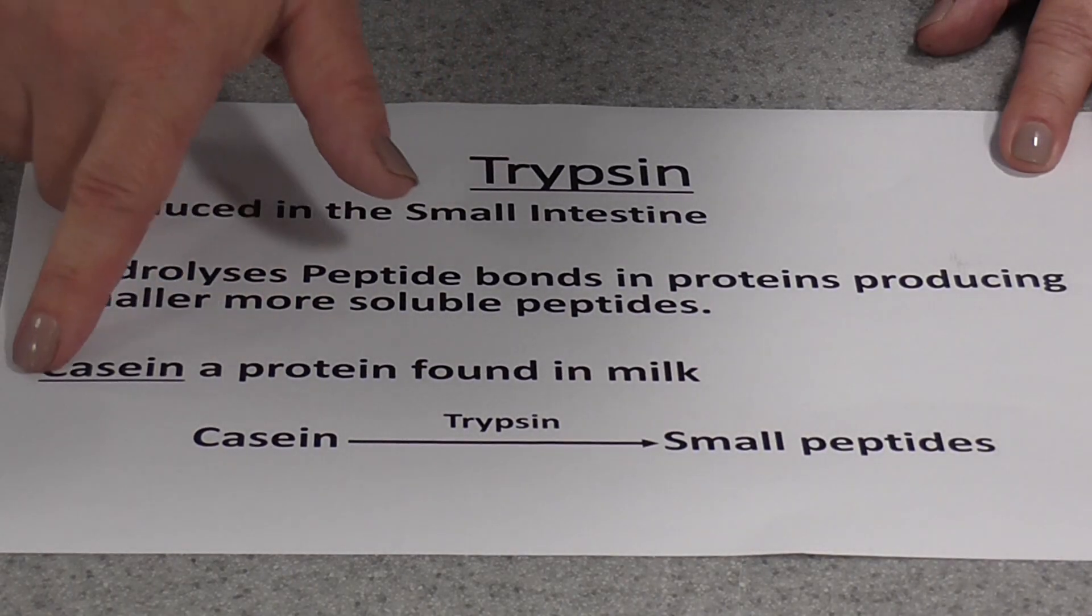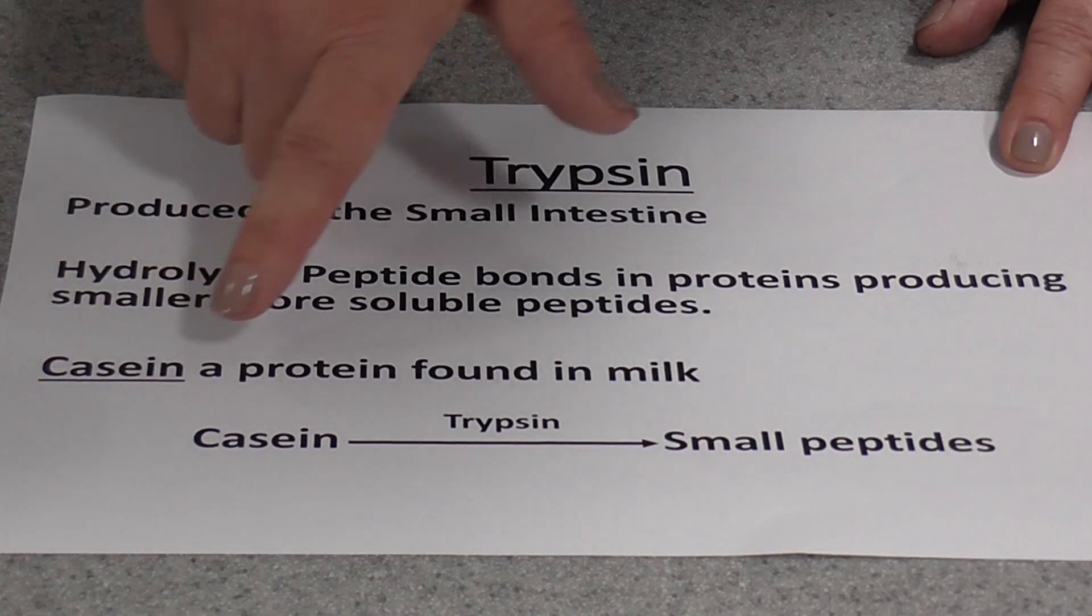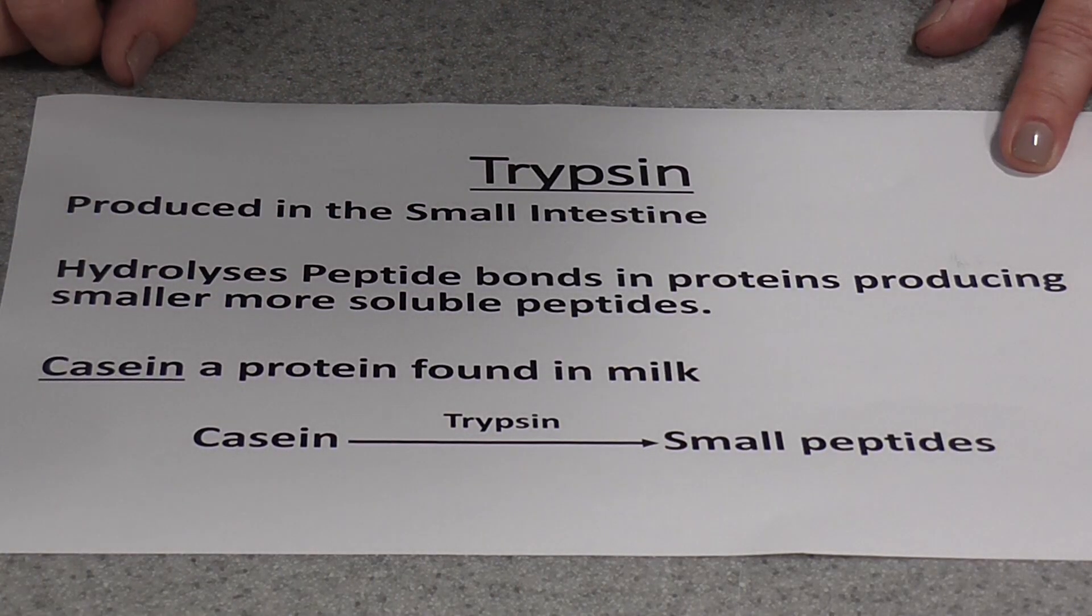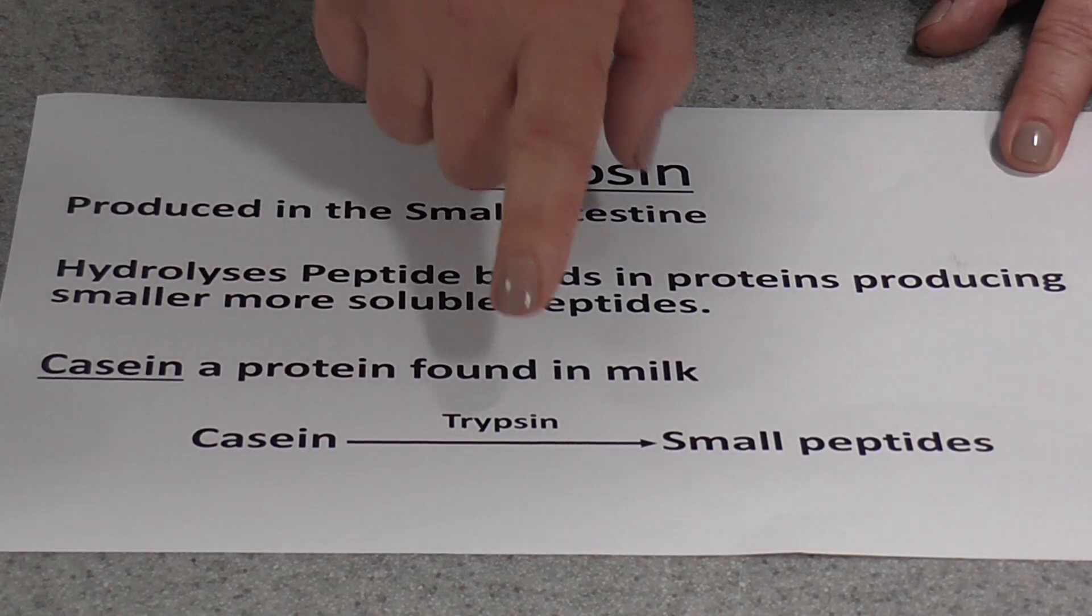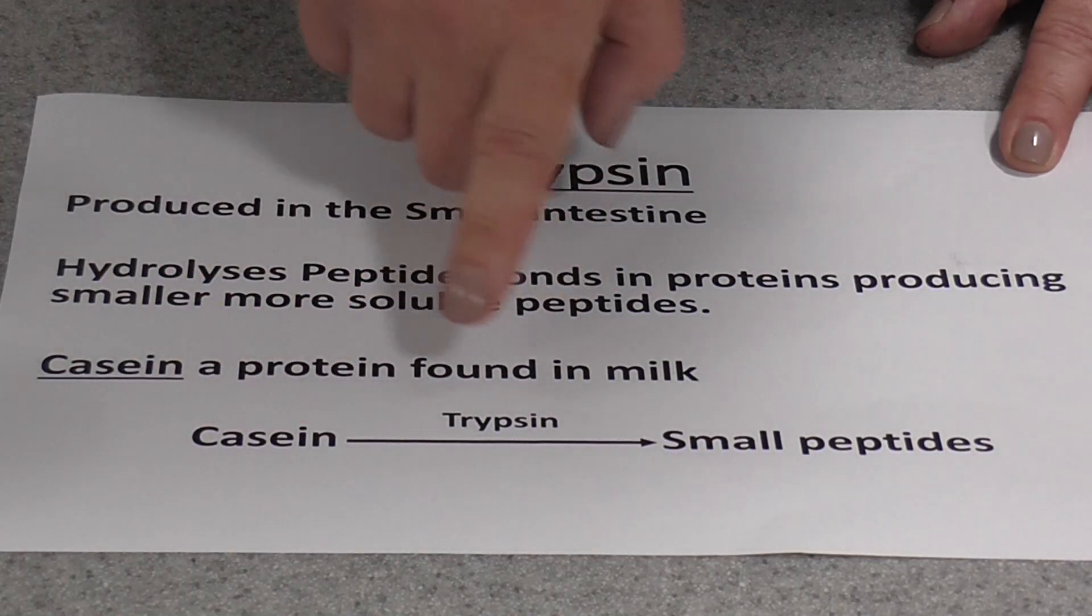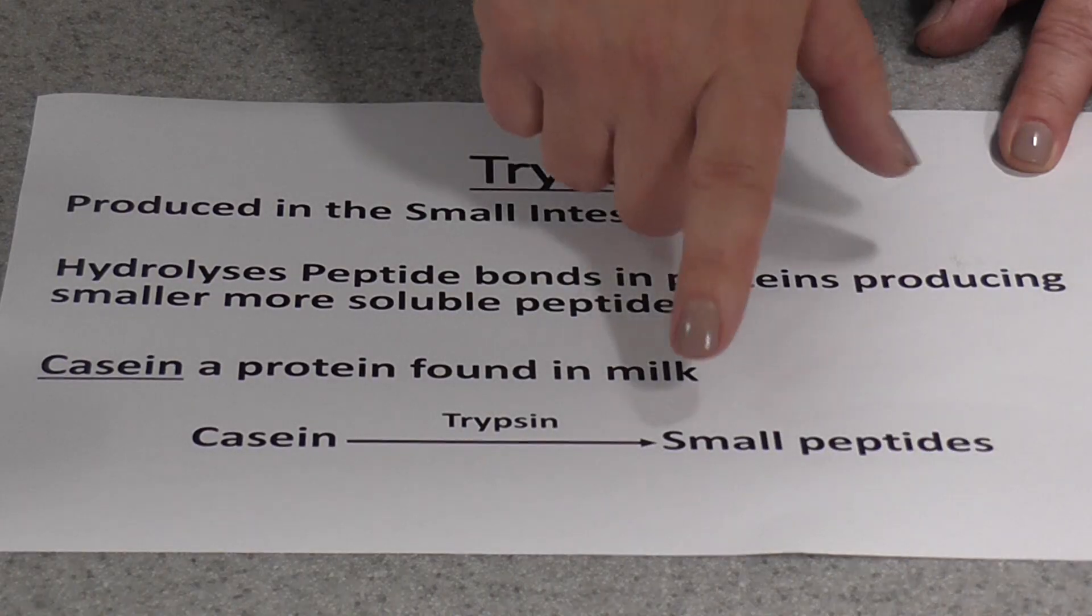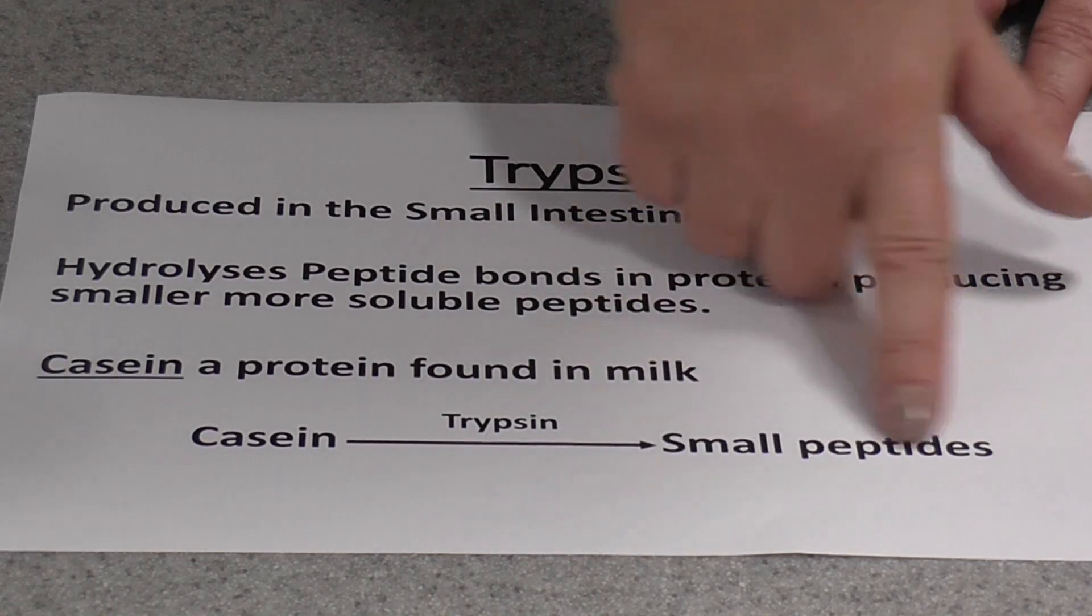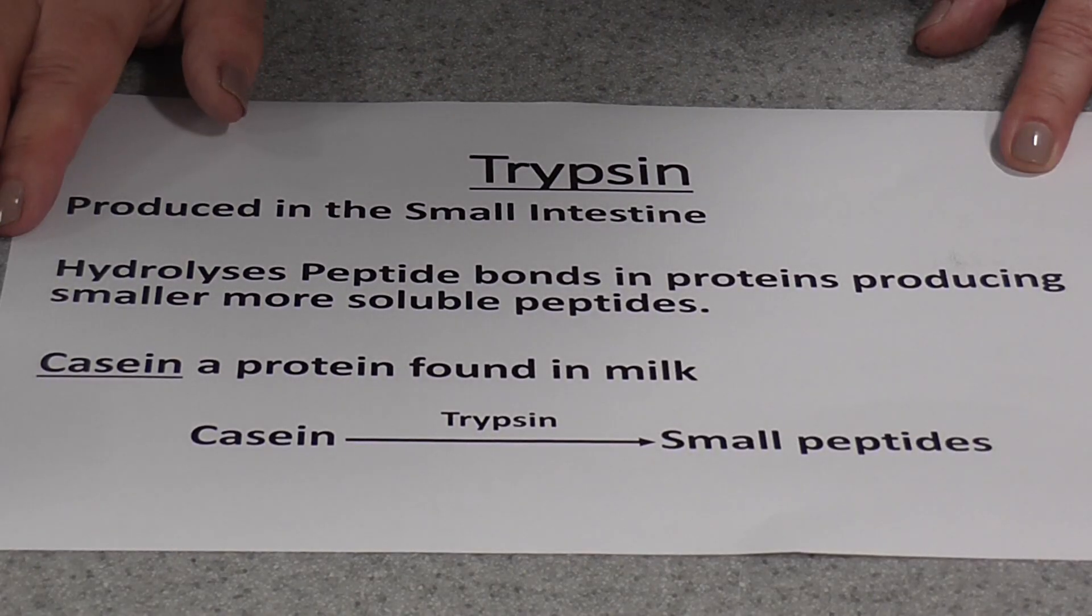The protein in milk is known as casein, so we're actually going to use powdered milk solution as our substrate for this reaction. Casein, which is fairly soluble, would be digested by trypsin to a mixture of small soluble peptides, and also it will produce a more fibrous protein which will settle out.